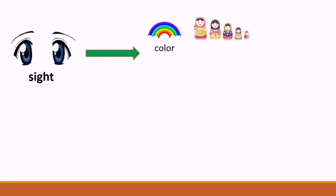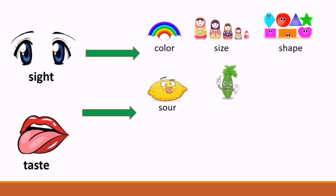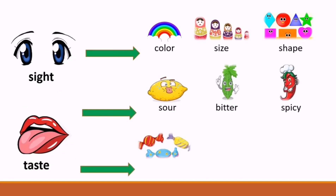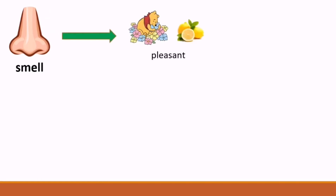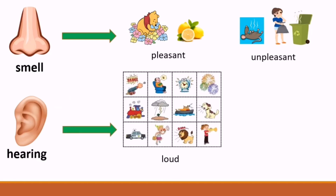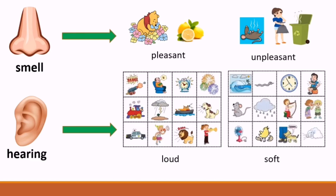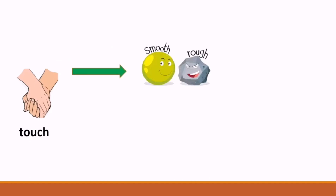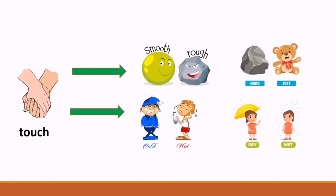Now, in general, our sense of sight can observe the color, the size, and the shape. Our sense of taste can taste the following: the sour, the bitter, the spicy, the sweet, the salty, and even the pungent food like garlic. The nose, which has the sense of smelling, can smell pleasant and unpleasant smells. The sense of hearing can hear loud or soft sounds. For loud sounds, you can hear the roaring of the lion, the sound of the trumpet, and the barking of the dog. For soft sounds, just like the ticking of the clock, the droplets of the rain, and the squeaking of the mouse. For the sense of touch, our skin can feel smooth and rough things. It can also feel the hot and the cold, the hard and the soft, and the dry and the wet.